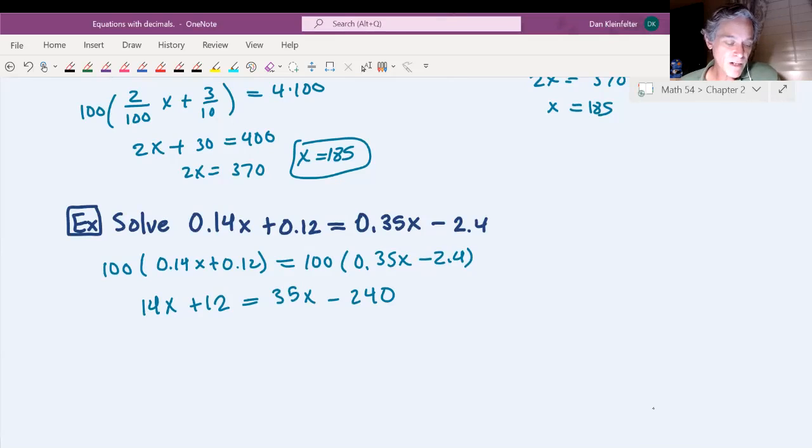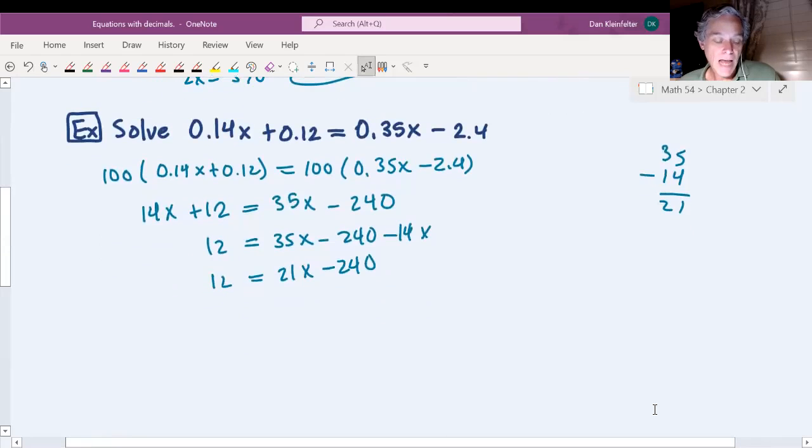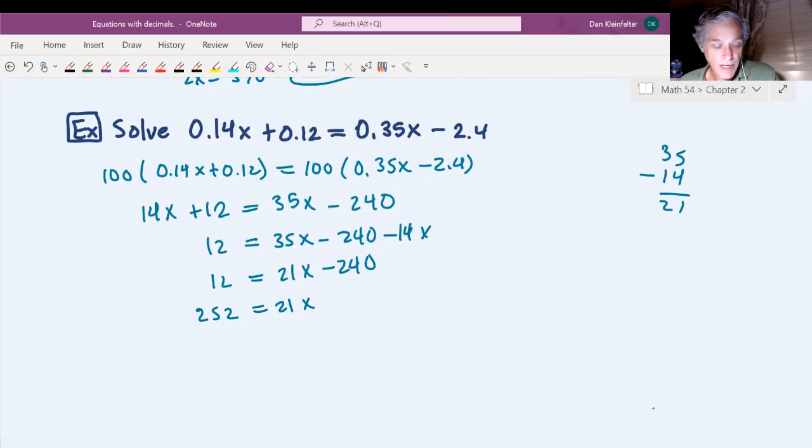I'm going to subtract 14x from both sides so that we'll just have variables be on the right. This will give us 21x on the right. Add 240 to both sides. And then I'm going to need to divide by 21.